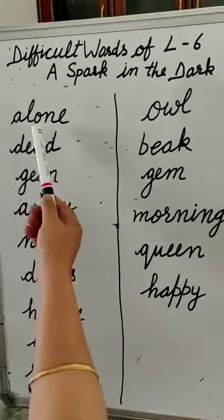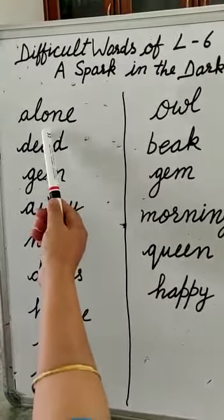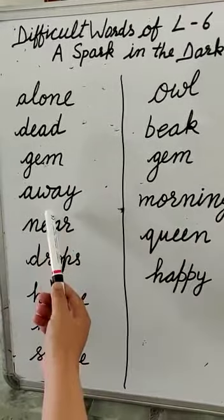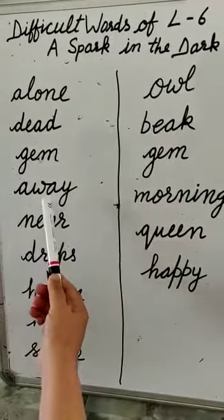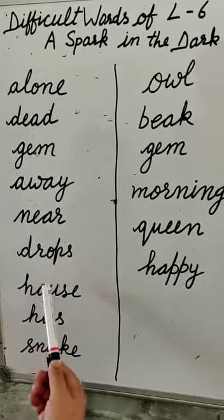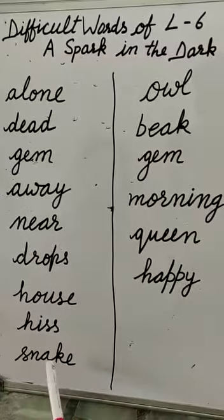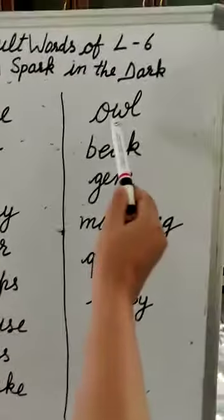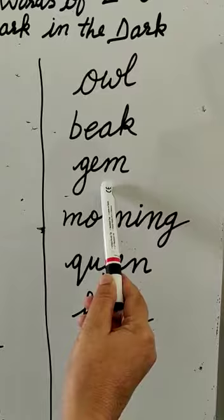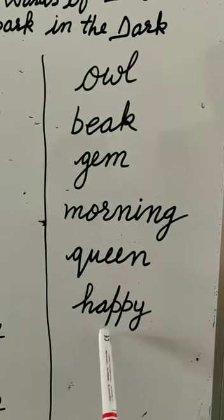Now read these difficult words: alone, dead, gem, away, near, drops, house, his, snake, owl, beak, gem, morning, queen, happy.